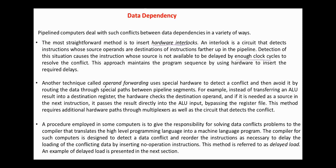Another technique called operand forwarding uses special hardware to detect a conflict and avoid it by routing the data through special paths between pipeline segments. For example, instead of transferring an ALU result into a destination register, the hardware checks the destination operand and if it is needed as a source in the next instruction, it passes the result directly into the ALU input, bypassing the register file. This method requires additional hardware paths through multiplexers as well as the circuit that detects the conflict.